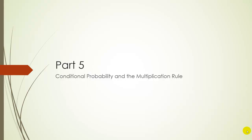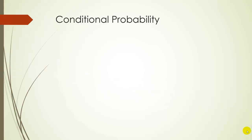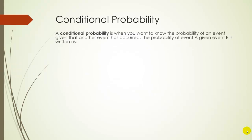For part 5, let's explore conditional probability and the multiplication rule. So let's start off with conditional probabilities. Often we want to know the probability of an event given that something else has already occurred. So we want to know the probability of event A given event B has occurred.